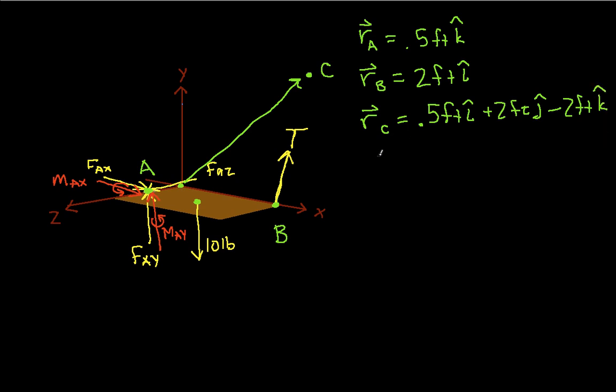And finally, the position vector for where we apply the weight, this is going to be 1 foot i-hat, we go 1 foot this direction, plus 0.5 feet k-hat, and then 1 foot this direction. So we have the geometry. We have everything we need now to solve for the 6 unknowns. So let's start doing that.